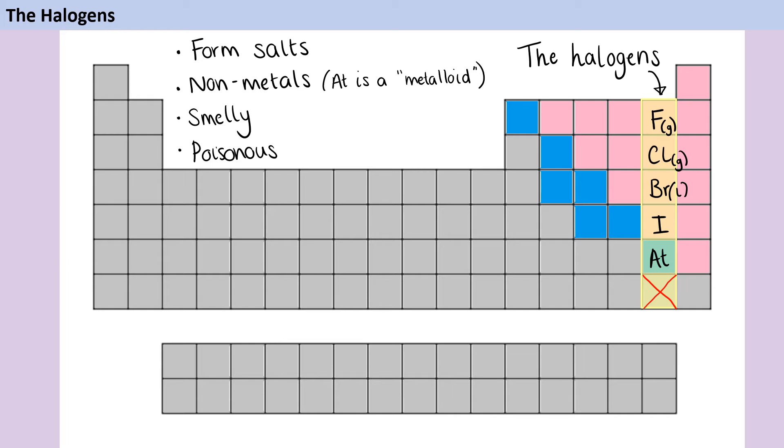Iodine and astatine have even higher boiling points, and higher melting points too, so at room temperature they haven't yet melted, and they're solids.